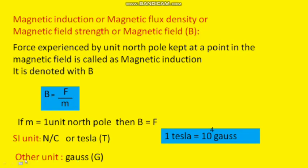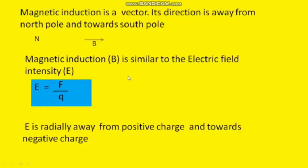Another unit of magnetic induction is gauss. The relation between tesla and gauss is: 1 tesla equals 10 to the power 4 gauss. Magnetic induction is an important physical quantity for measuring the strength of the magnetic field. It is also a vector.